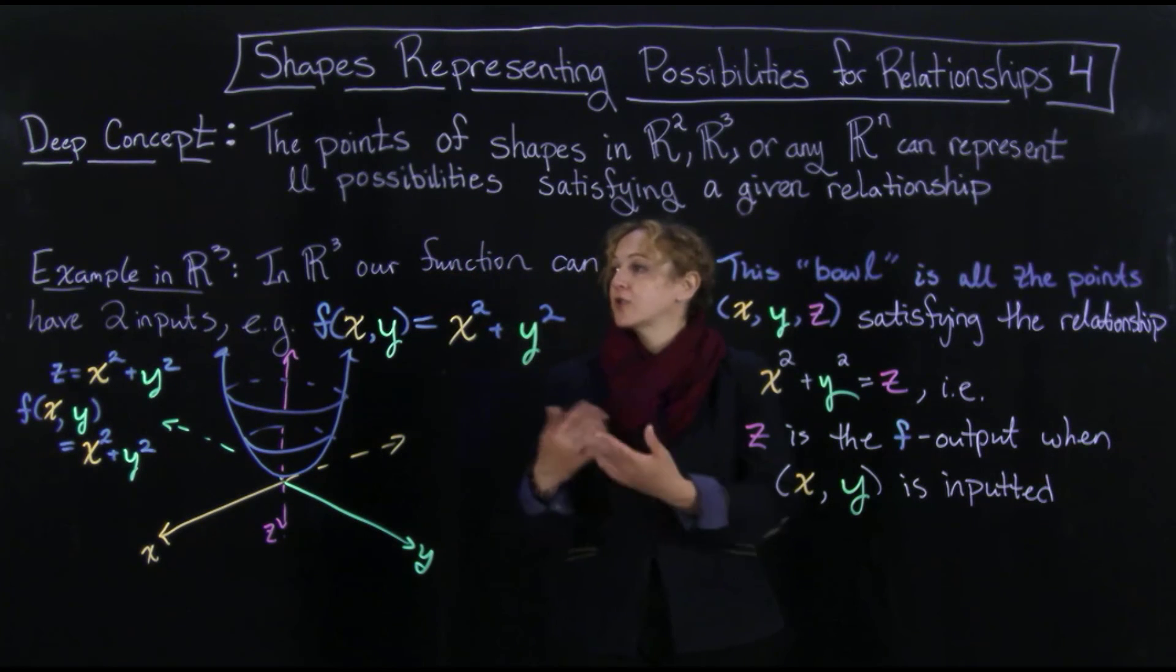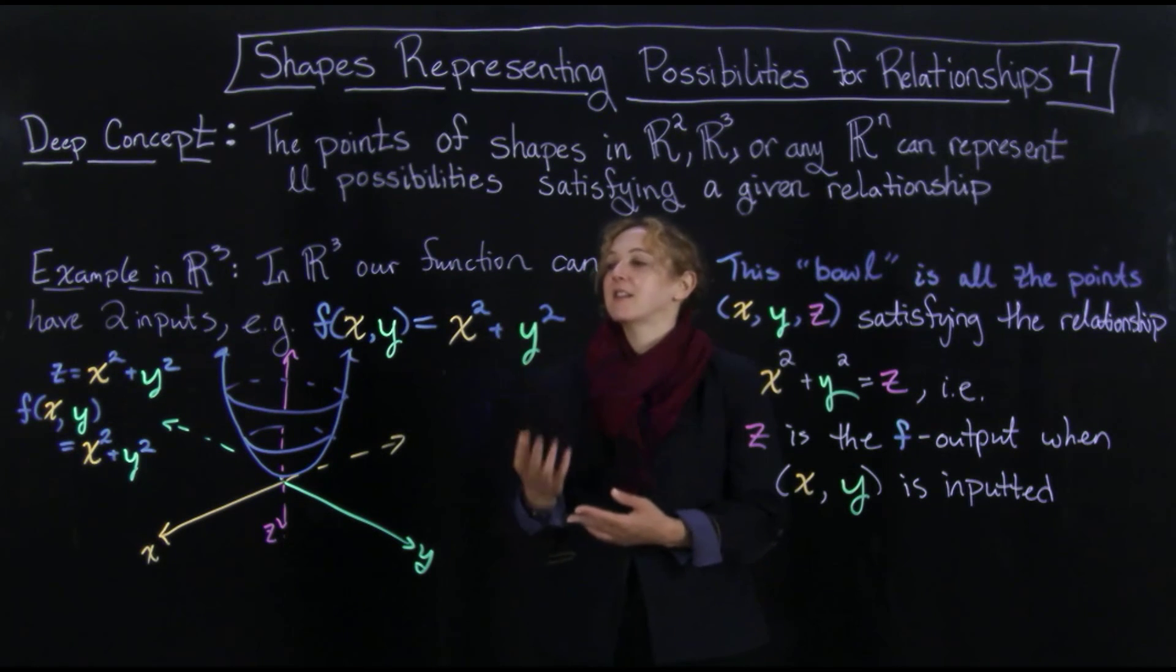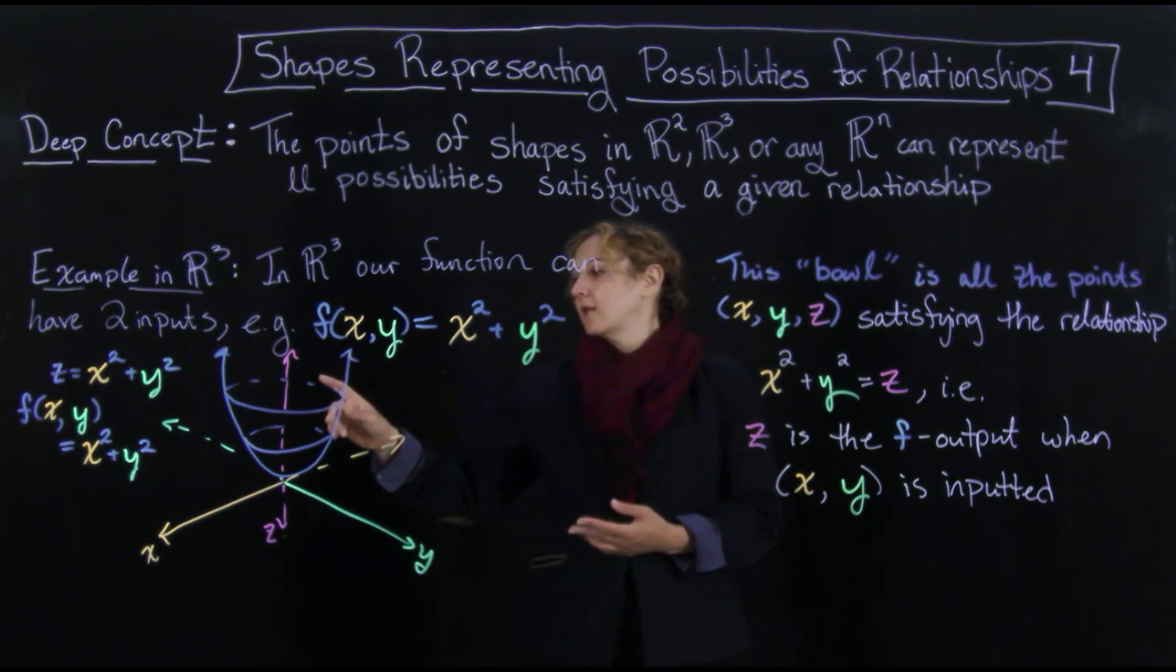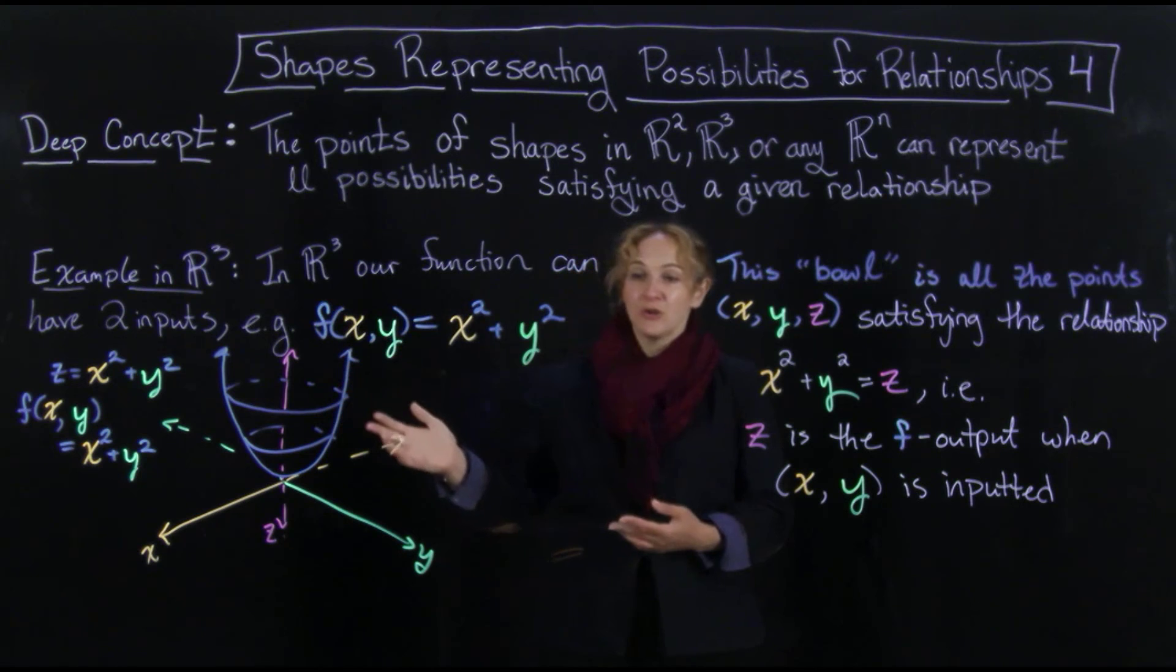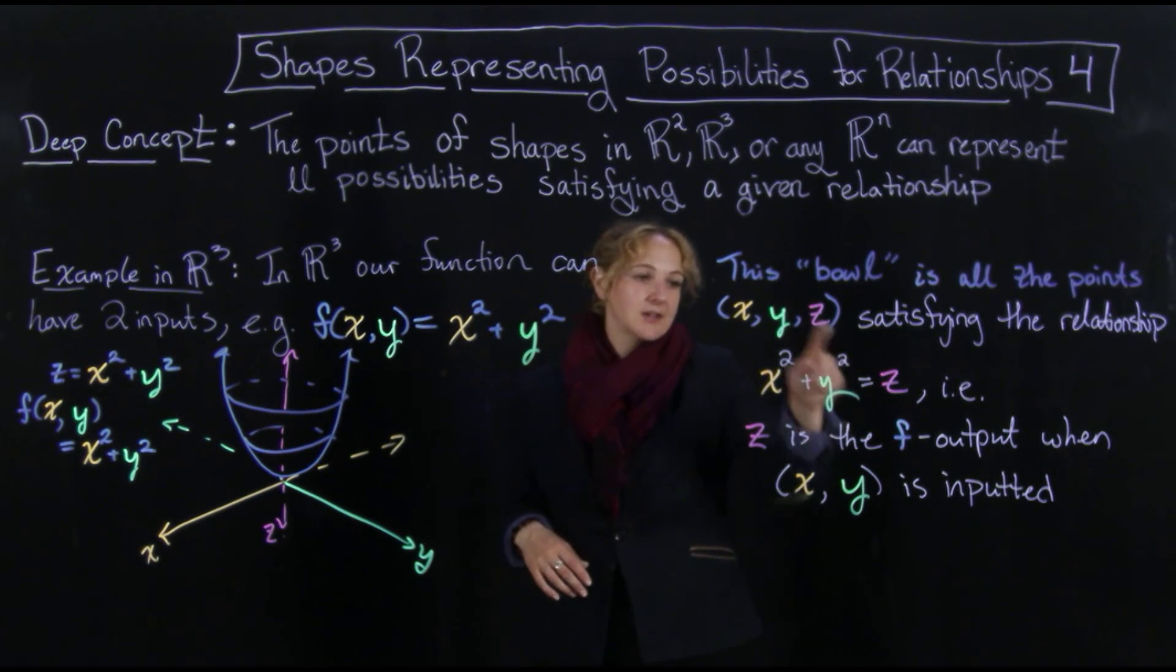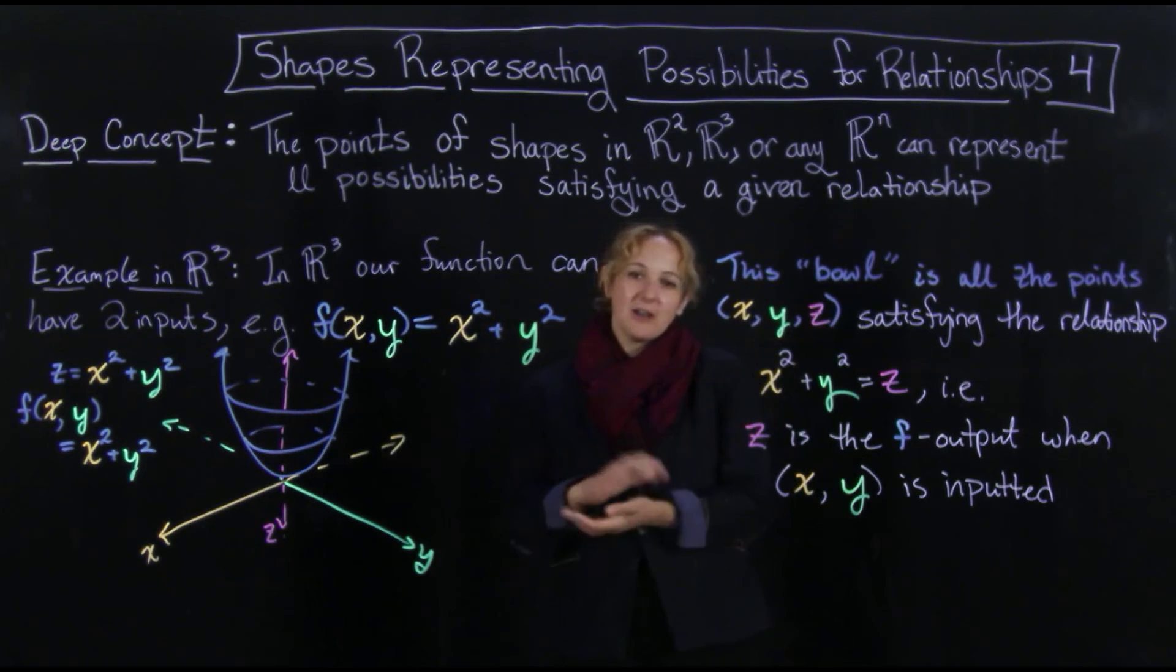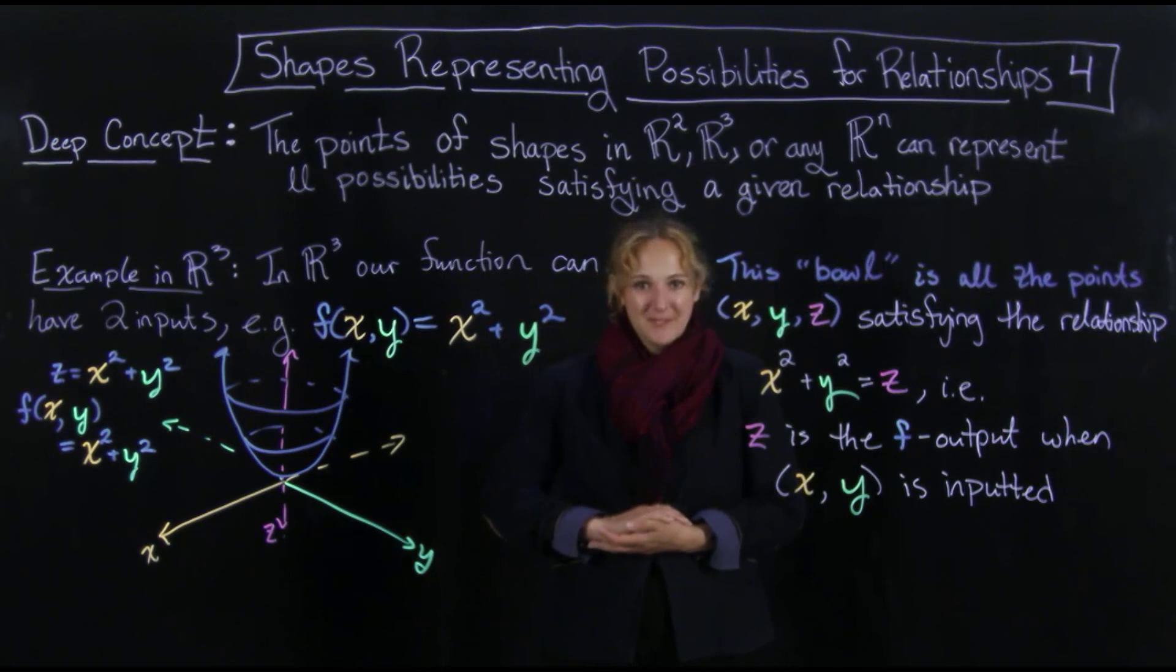So in this circumstance, we have the graph of a function where there are two inputs, and the third coordinate, your z coordinate, is the output that comes from the function when you input your x and y coordinates. I hope that made some sense, and I will see you in the next lecture.